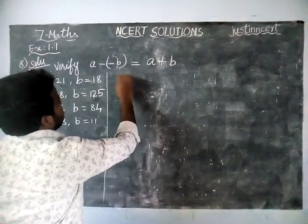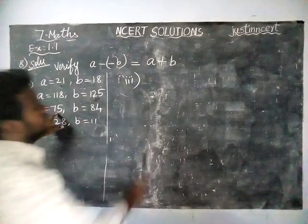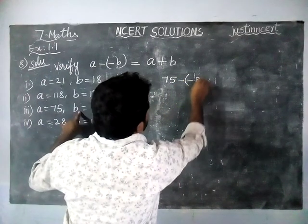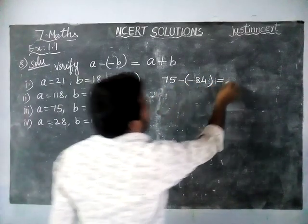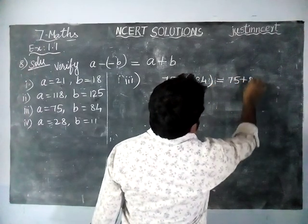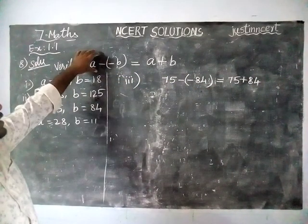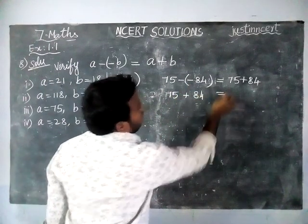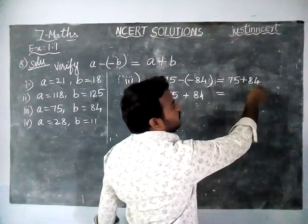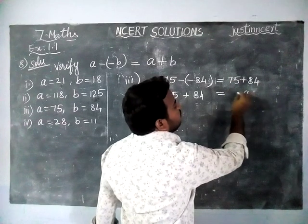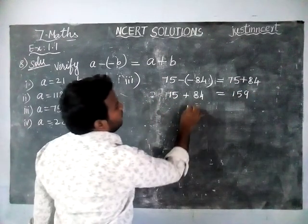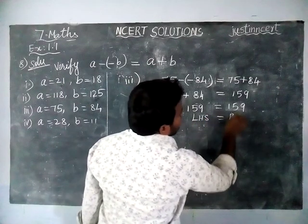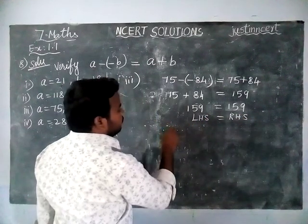Third option: A value is equal to 75 and B value is equal to 84. Substituting in the equation: 75 minus (minus 84) is equal to 75 plus 84. The minus minus will become plus, so 75 plus 84: 5 plus 4 is equal to 9; 8 plus 7 is equal to 15. So 159 is equal to 159. Left hand side is equal to right hand side, therefore it is verified.